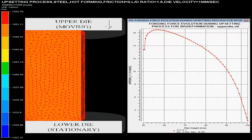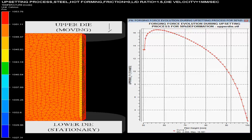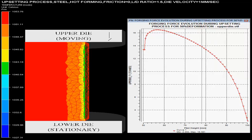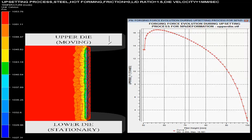On the right-hand side, one could see the graph of forging force on the upper die versus billet height, showing the forging force evolution during the upsetting process for 50% deformation.